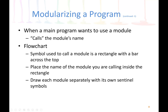We also have flowcharts, which we covered in previous lectures. The flowchart symbol used to call a module is a rectangle with a bar across the top — slightly different from a regular process rectangle. To get input or display output we use a parallelogram symbol. Each module must be drawn separately with its own sentinel symbols.